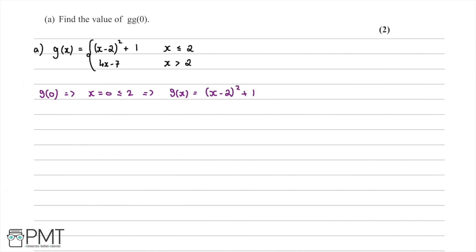For g of 0, we substitute x equals 0, giving us 0 minus 2 squared plus 1. That is negative 2 squared plus 1, which equals 4 plus 1, so g of 0 is equal to 5.